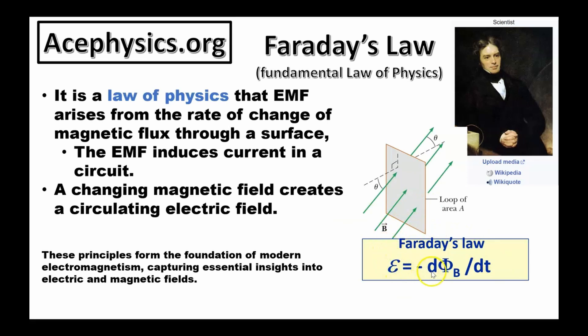EMF is equal to negative d phi b by dt. Here, phi b represents the magnetic flux, and the negative sign reflects Lenz's Law, which ensures the induced current opposes the change in flux. These concepts are foundational in electromagnetism.